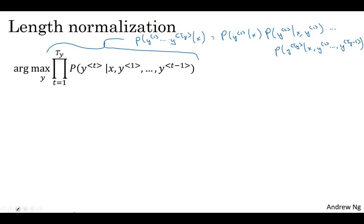If you're implementing these, these probabilities are all numbers less than one, in fact often they're much less than one, and multiplying a lot of numbers less than one will result in a tiny, tiny, tiny number which can result in numerical underflow. This means it's too small for the floating point representation in your computer to store accurately. So in practice, instead of maximizing this product, we will take logs.